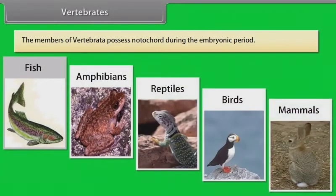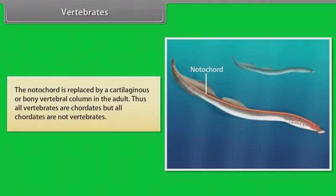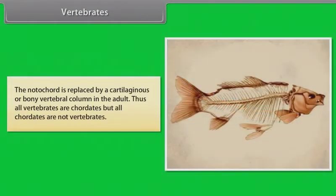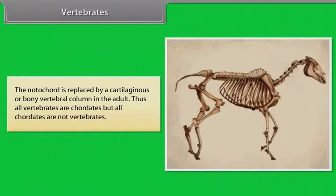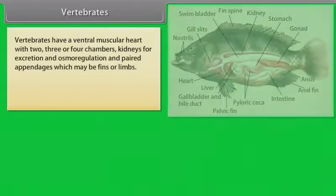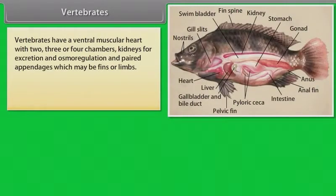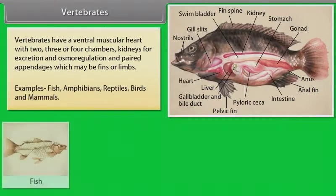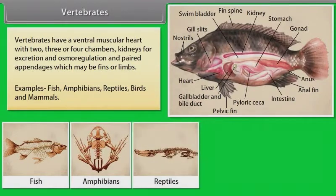The members of Vertebrata possess notochord during the embryonic period. The notochord is replaced by a cartilaginous or bony vertebral column in the adult. Thus, all vertebrates are chordates, but all chordates are not vertebrates. Vertebrates have a ventral muscular heart with two, three or four chambers, kidneys for excretion and osmoregulation, and paired appendages which may be fins or limbs. Examples: fish, amphibians, reptiles, birds and mammals.